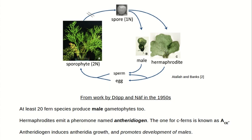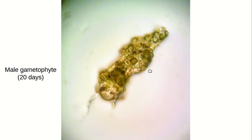Here is a photograph of a male gametophyte. You can see it was produced from this spore, and each of these little nodules are antheridia. The antheridia are what will dehisce and produce sperm.